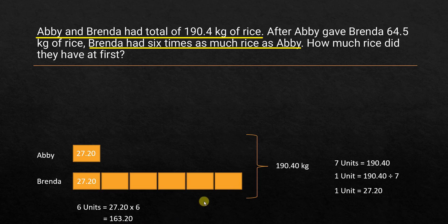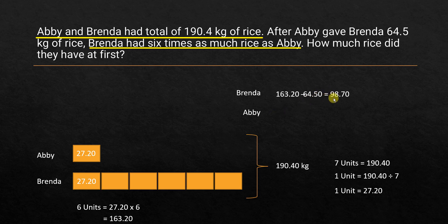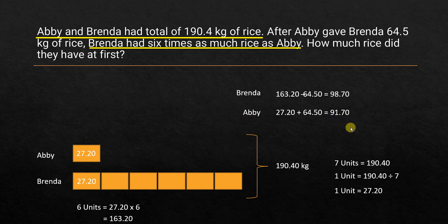We have to give back Abhi the amount of rice that she received from him. Brenda currently has 163.20 kilograms of rice. If we reduce 64.50 kg — the rice she received from Abhi — she will be left with 98.70 kilograms. And Abhi currently has 27.20, and to that we add 64.50, so the total we get is 91.70 kilograms for Abhi. So at first, Brenda had 98.70 kilograms of rice and Abhi had 91.70 kilograms of rice.